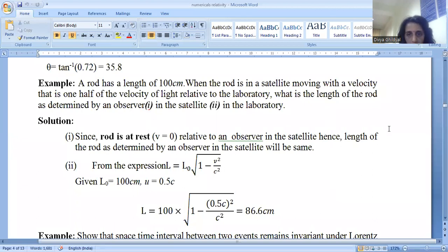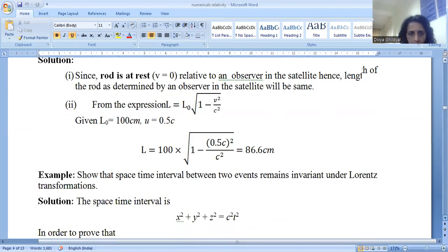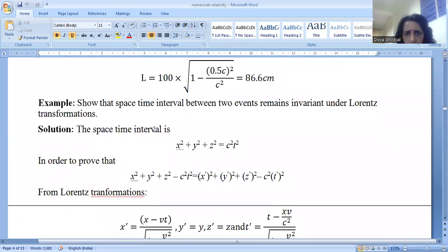Next question. Show that the space time interval between two events remains invariant under Lorentz transformation. The space time interval is given by x square plus y square plus z square is equal to c square t square, where c is velocity of light and t is time, which is actually distance. In relativity we take velocity of light, so distance is speed into time. Speed here is velocity of light.